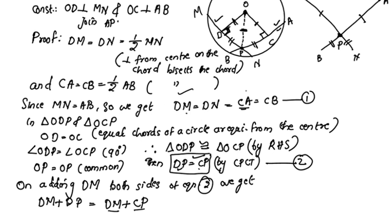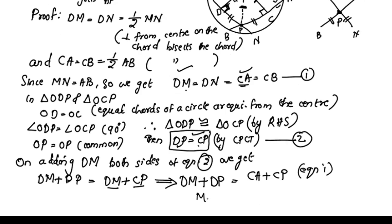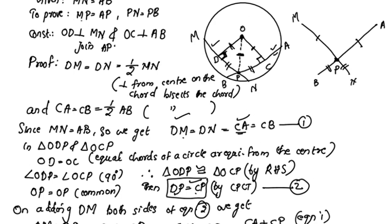Since DM equals CA, we substitute: DM plus DP equals CA plus CP. This gives us MP equals AP. So MP is equal to AP is proved. This is equation 1. Now we need to prove PN is equal to PB.